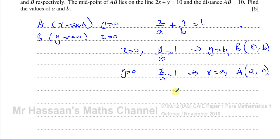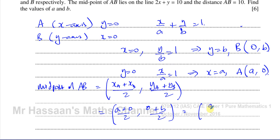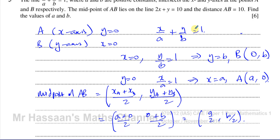Now I need to find the midpoint of AB. The midpoint x-coordinate is (a + 0)/2 and the y-coordinate is (0 + b)/2, giving us the midpoint as (a/2, b/2). We're told that this midpoint lies on the line 2x + y = 10.